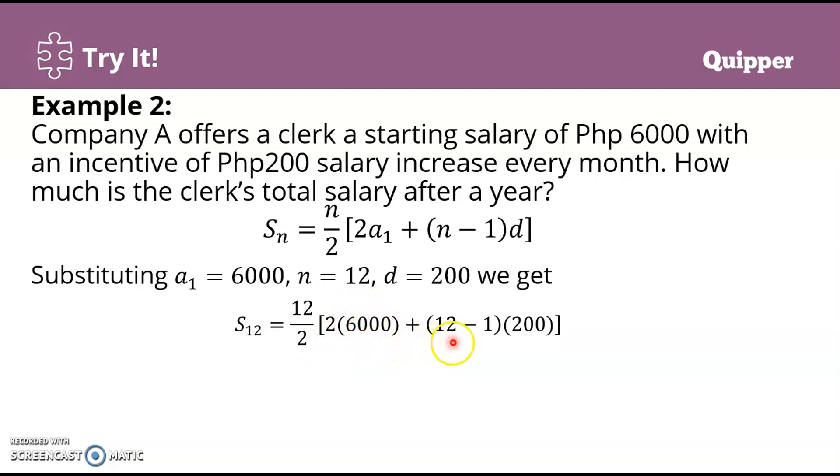Solving: 12 minus 1 is 11. 11 times 200 gives you 2,200. And then 2 times 6,000 gives you 12,000. So 12 over 2—that's like 12 divided by 2—that's 6. 6 times (12,000 + 2,200) equals 6 times 14,200.